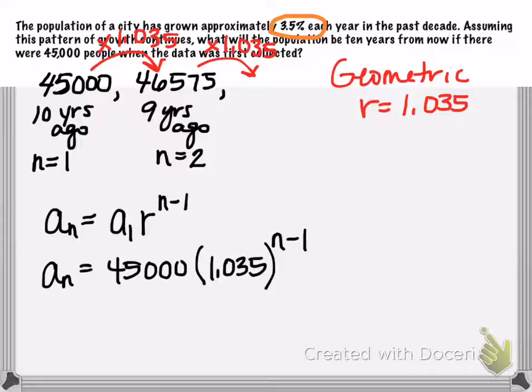But now we need to think about if we want the population right now, then we've got to figure out, well, excuse me, we don't want the population now. We want it 10 years from now. It says what will the population be 10 years from now? How does that relate to our initial value of 45,000, which was 10 years ago?